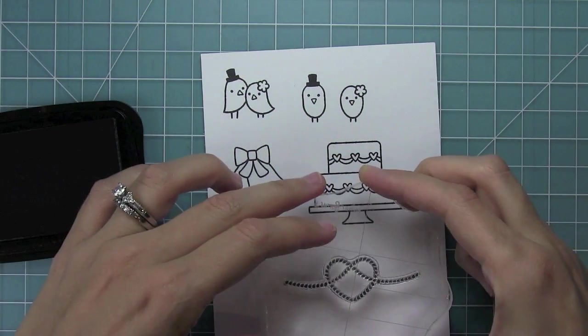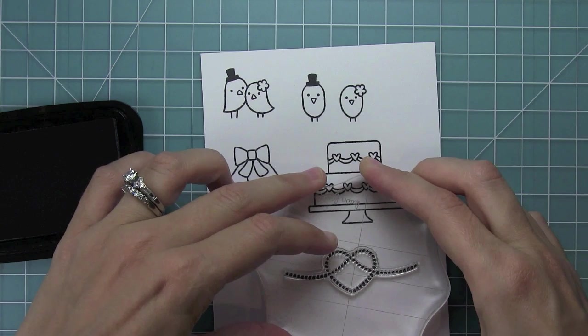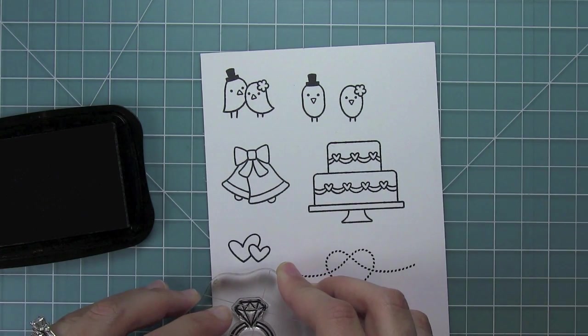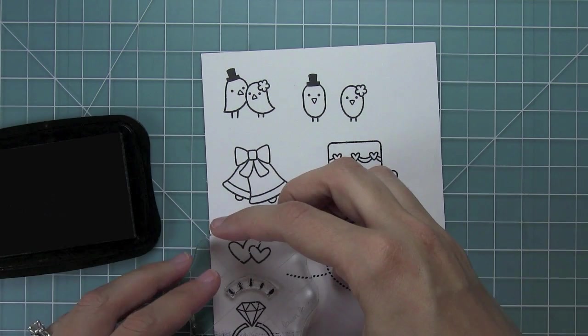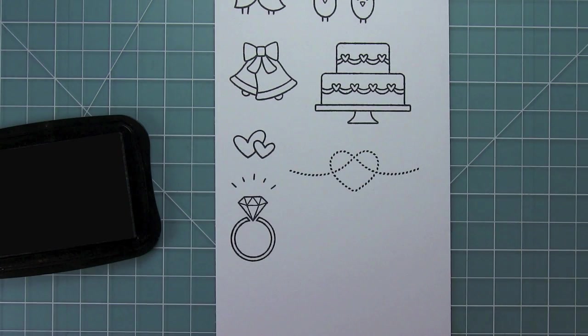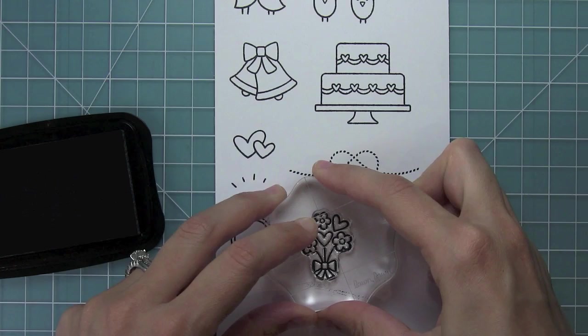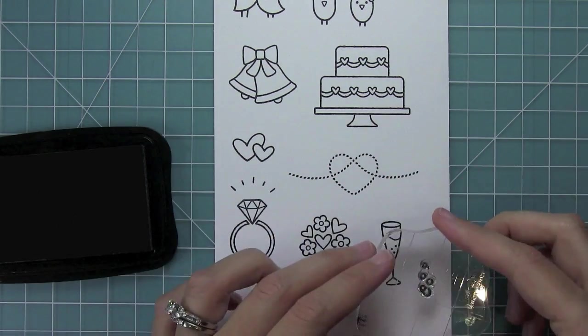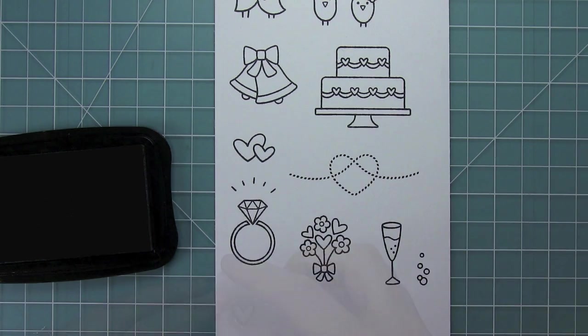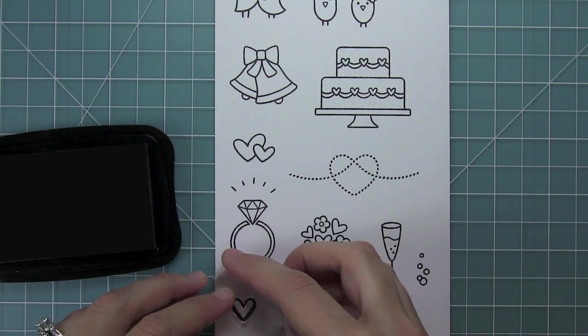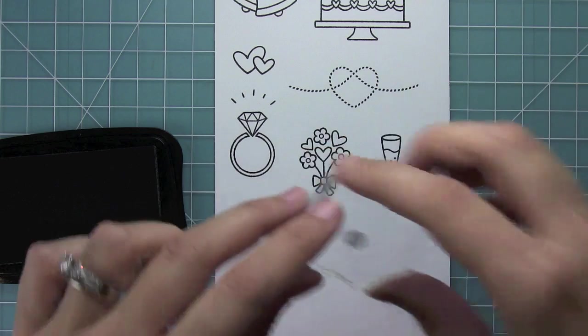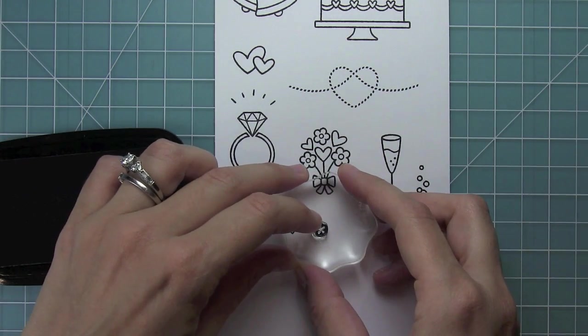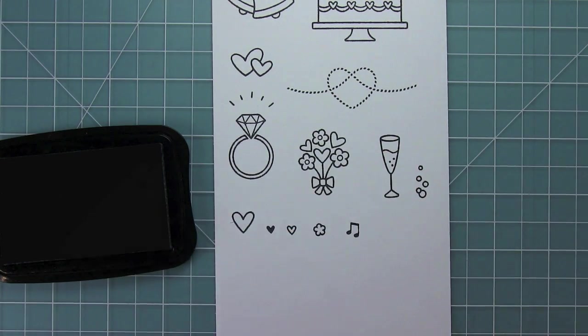We have some great hearts. This fun little knotted heart which is going to go along with one of our sentiments. An engagement ring and of course some shine marks to go with the engagement ring. A little bouquet, a champagne glass, some bubbles. And here are just some fun hearts for kind of setting the scene or creating little backgrounds. And we've got a little flower too and of course some music notes.